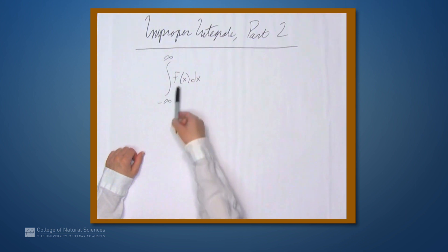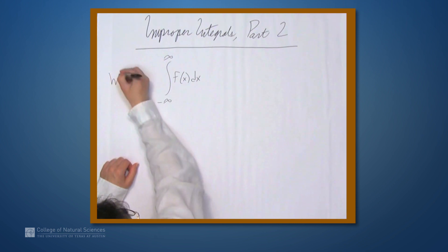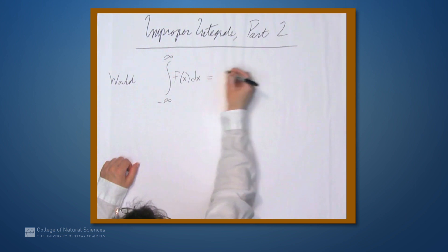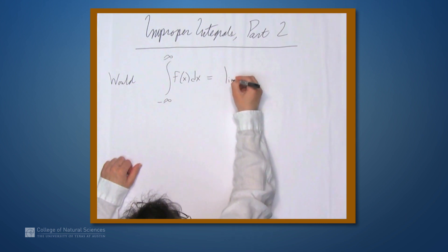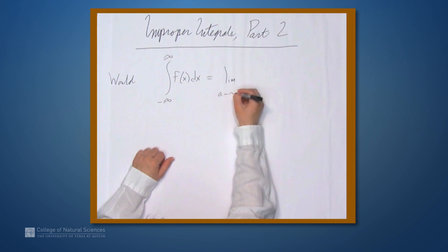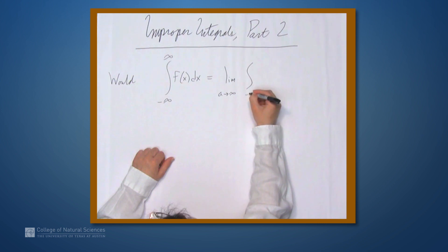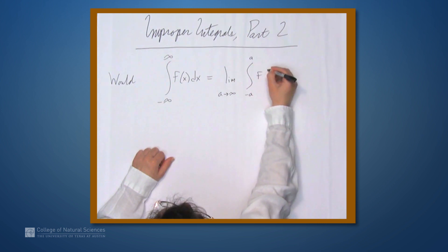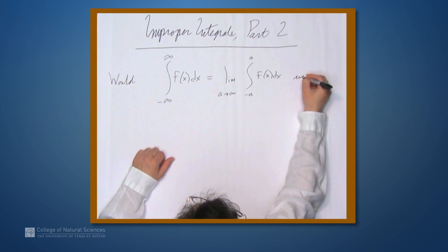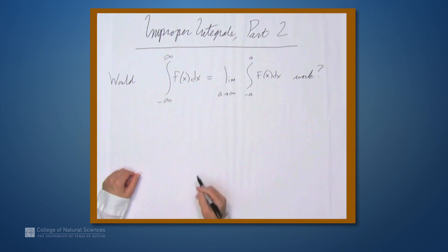For our purposes here, let's assume that f of x is bounded everywhere. As a definition, we might be tempted to say that this should be defined as the limit as a approaches infinity of the integral from negative a to a of f of x dx. But would this actually work as a definition?